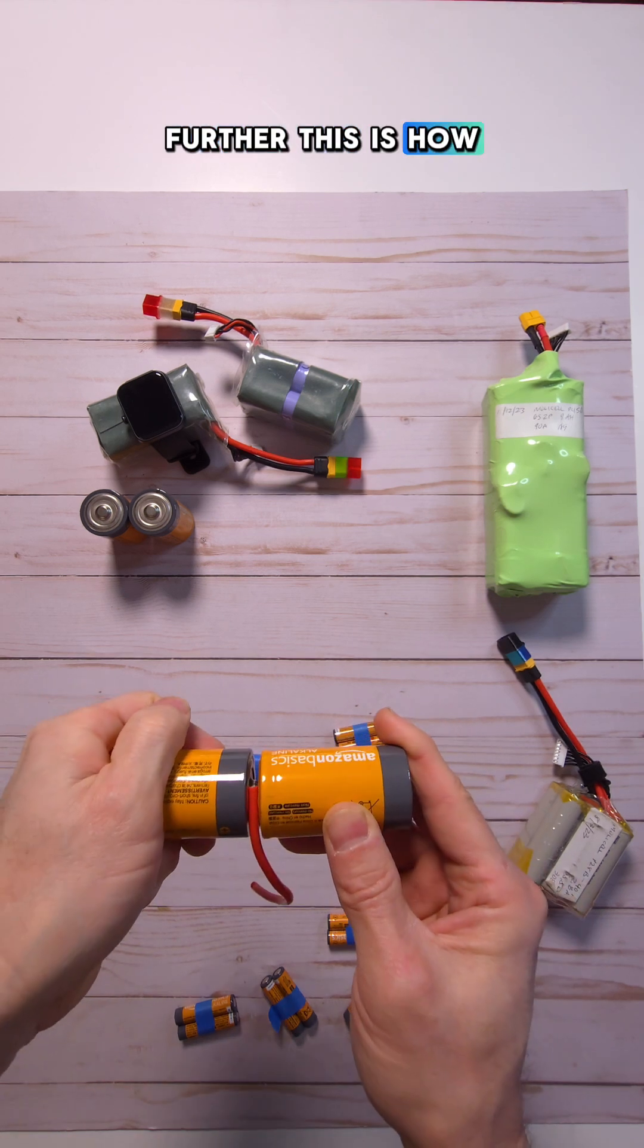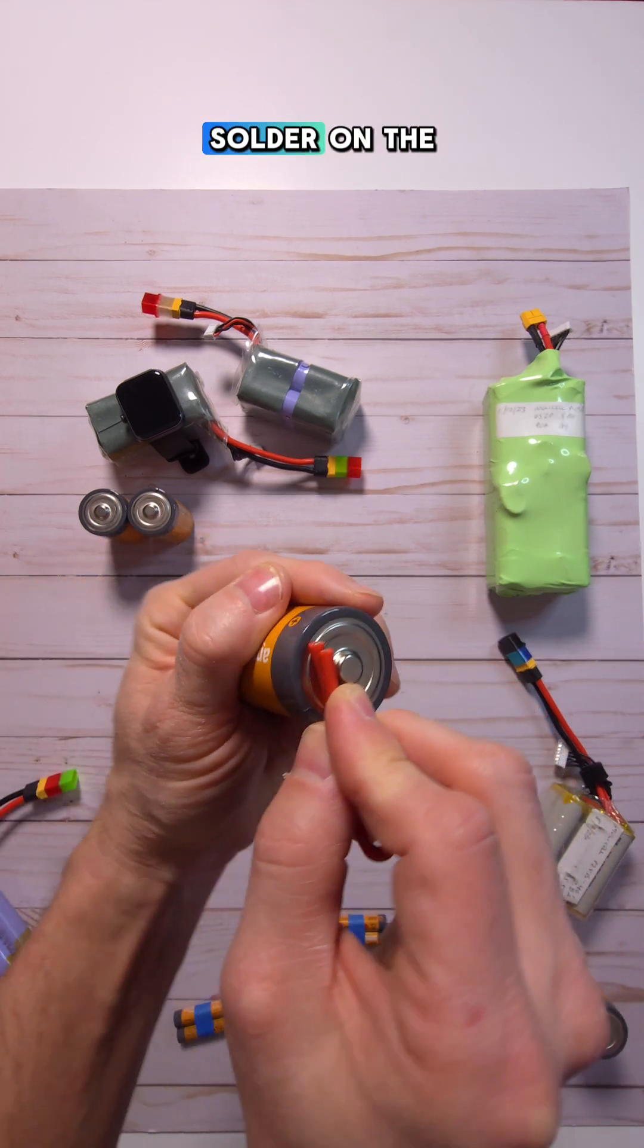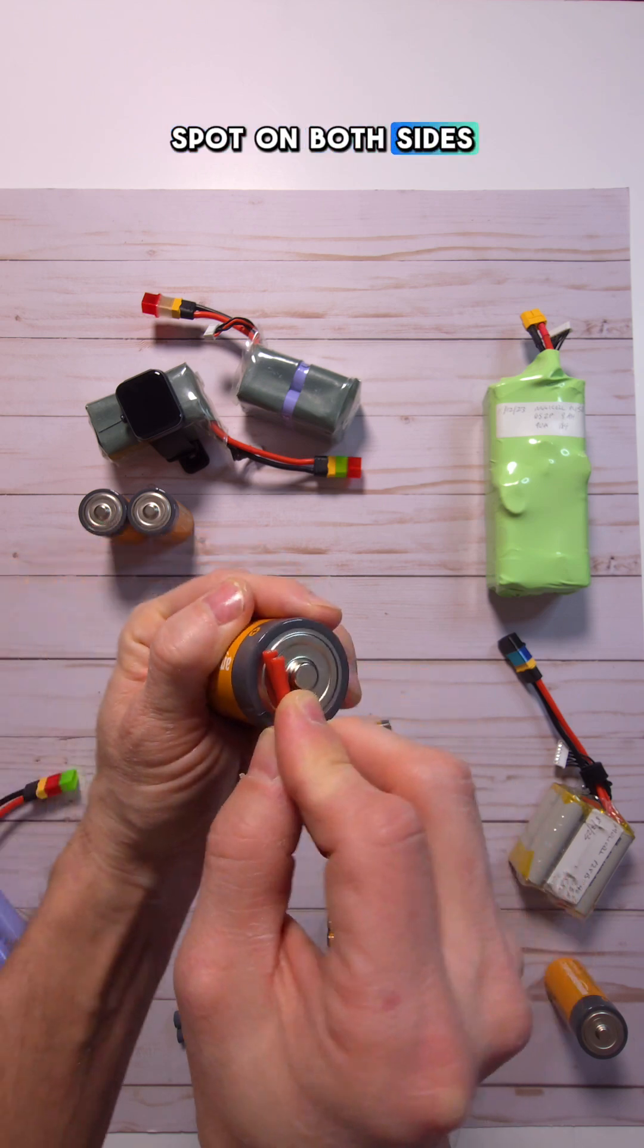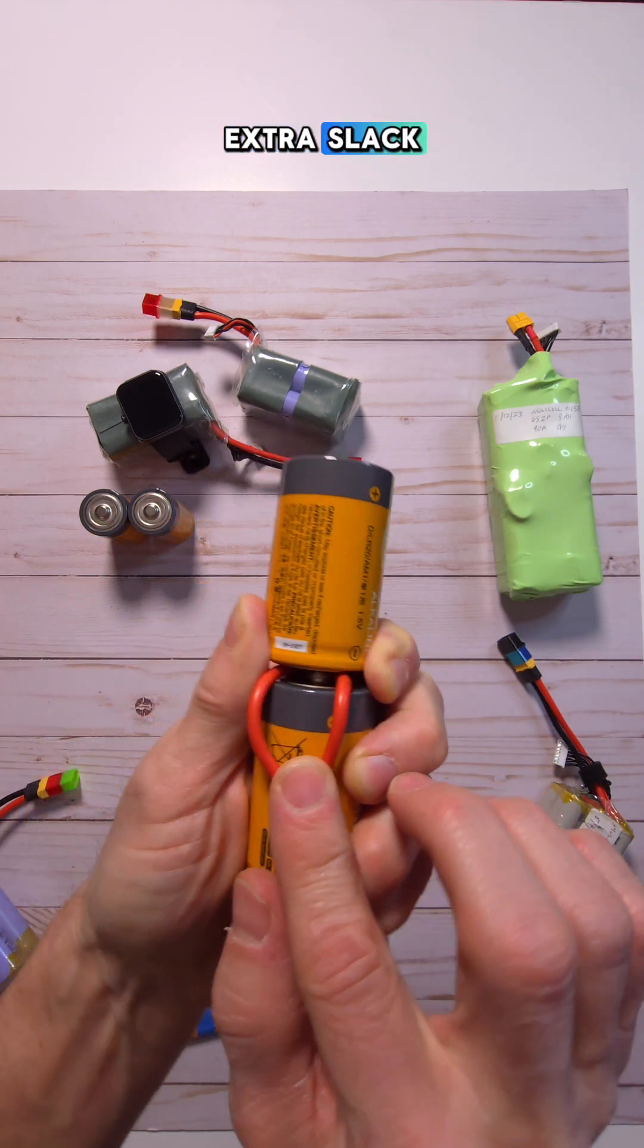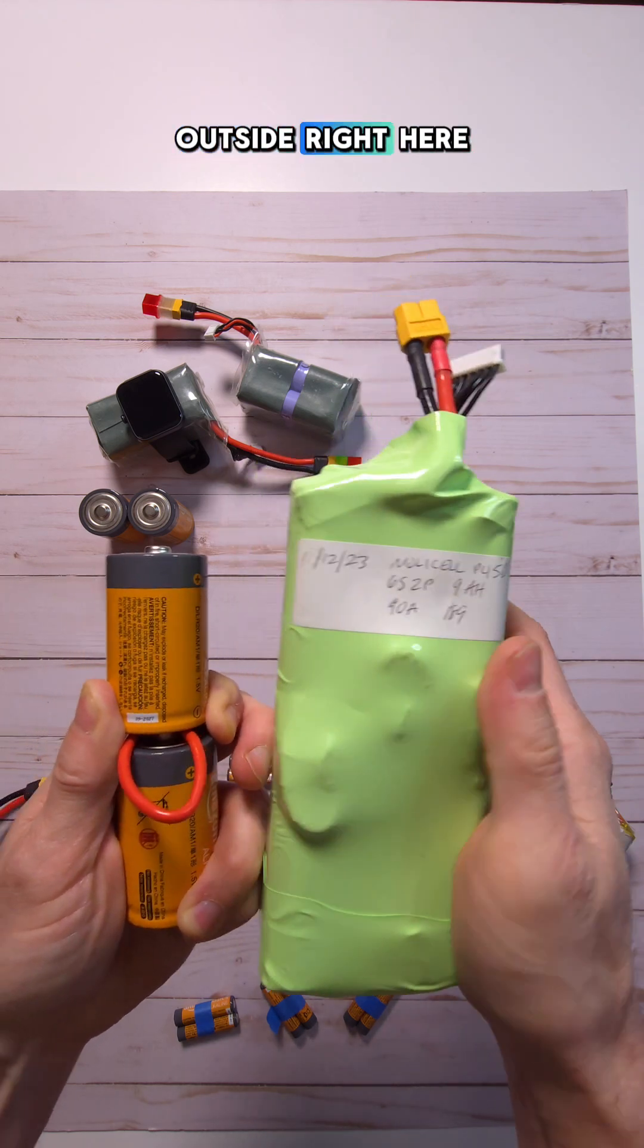To visualize it further, this is how thick it would be. This is the right way versus something like this, if you were to solder on the exact same spot on both sides. And of course, you'll want to leave yourself a little extra slack so you can solder both sides and then put them together, which is why you see these little loops on the outside right here.